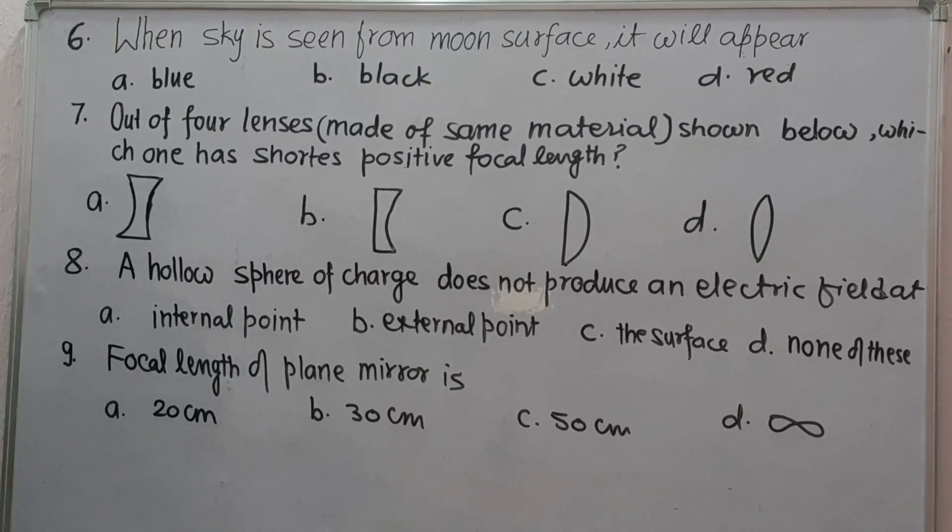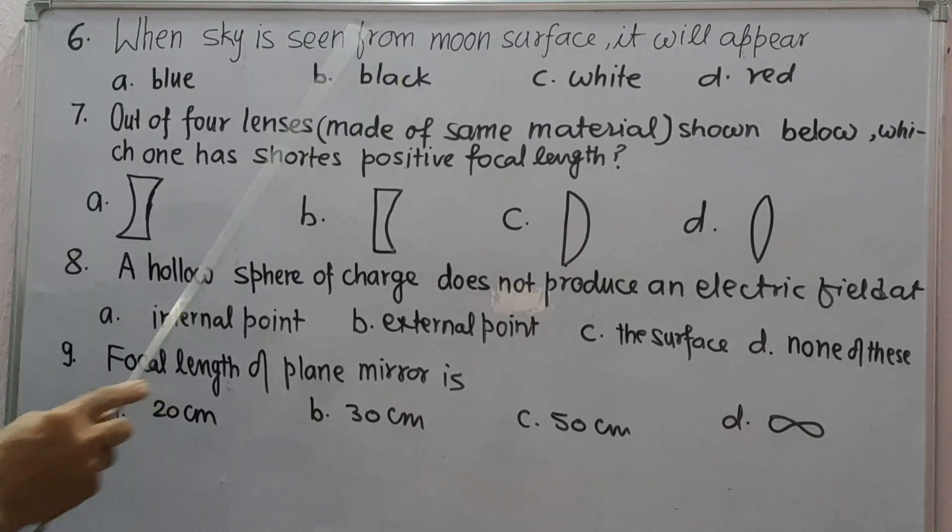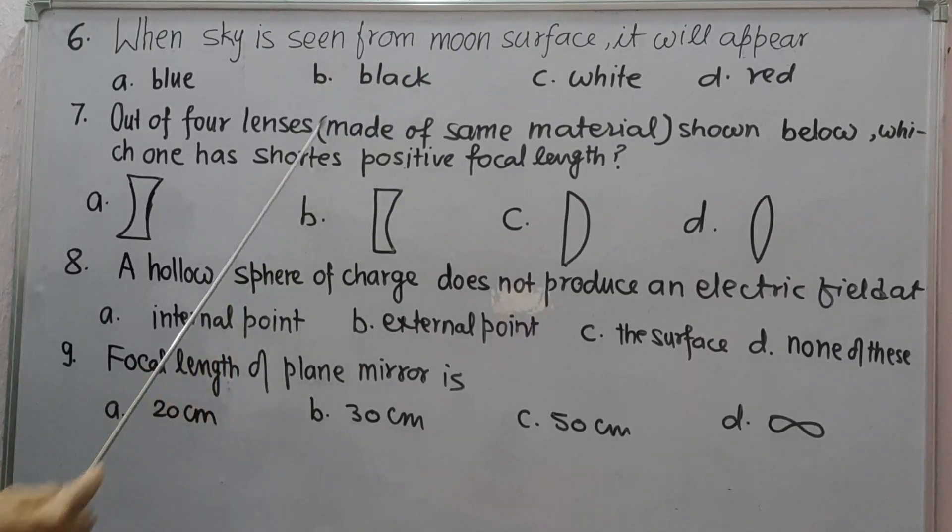Next question number 6: when sky is seen from moon surface, it will appear - these are the options. When we see sky from moon surface, it will appear black because moon has no atmosphere.